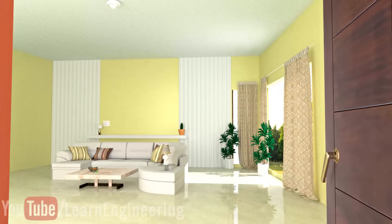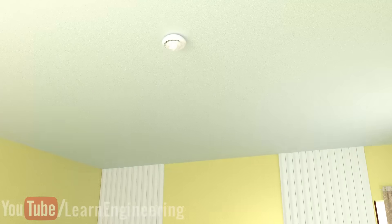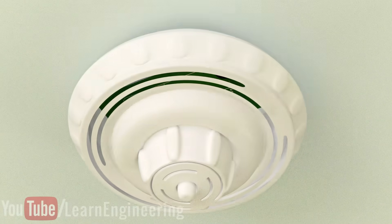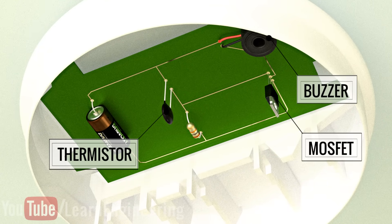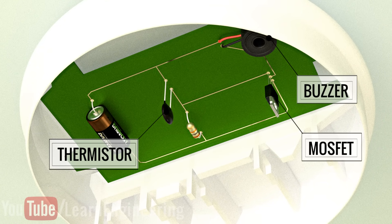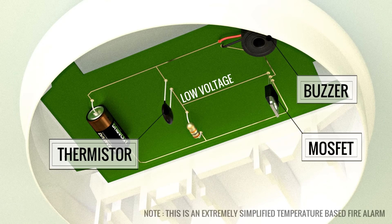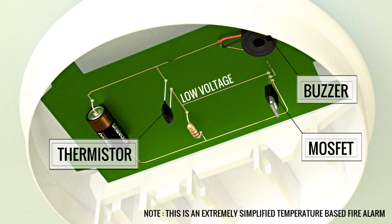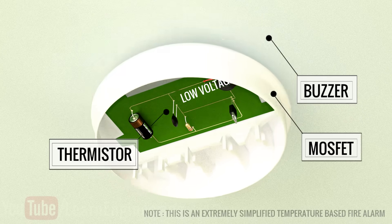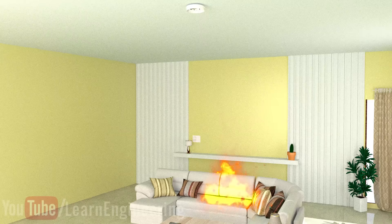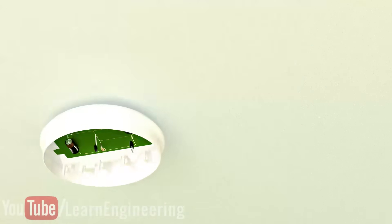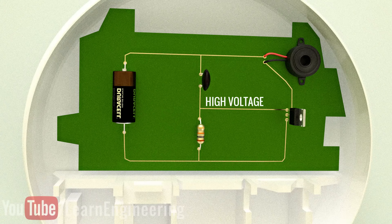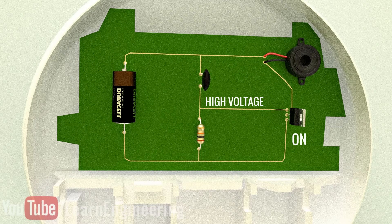Now let's see a real-life example where a MOSFET works as a switch. Consider this heat-based fire alarm. The thermistor in the circuit decreases its resistance with an increase in temperature. Initially, at room temperature, the voltage at the gate is low due to the high thermistor resistance, and that is not sufficient to turn ON the MOSFET. If the temperature increases, the thermistor's resistance decreases. This will lead to a high gate voltage, which then turns ON the MOSFET and the alarm.